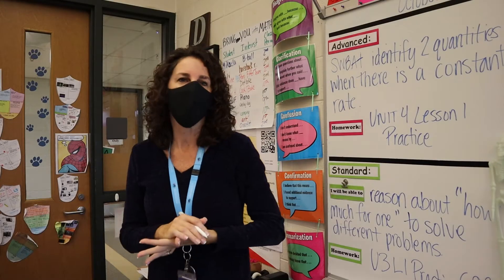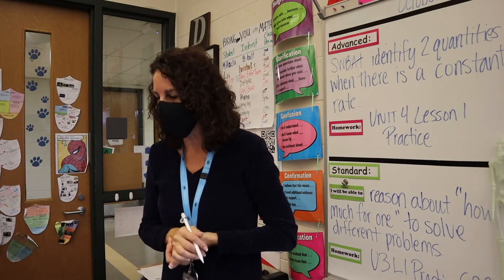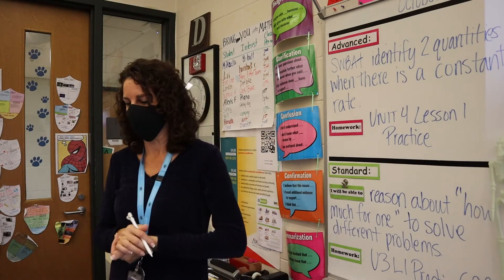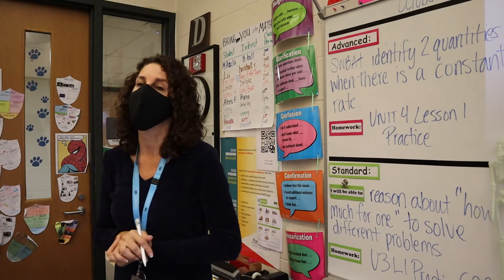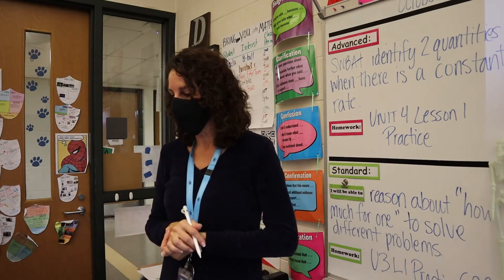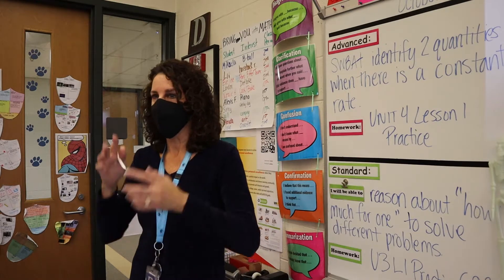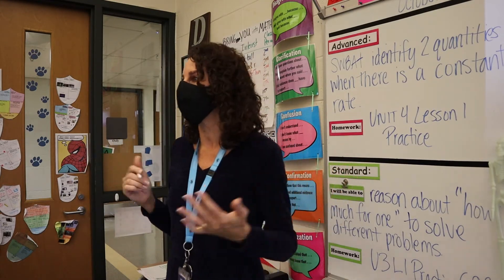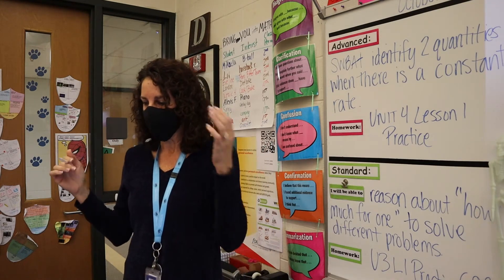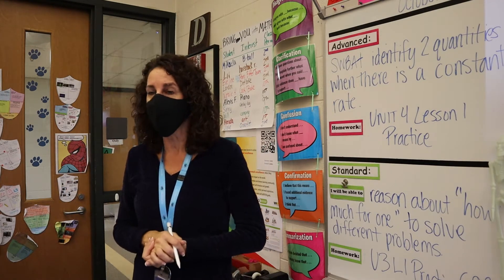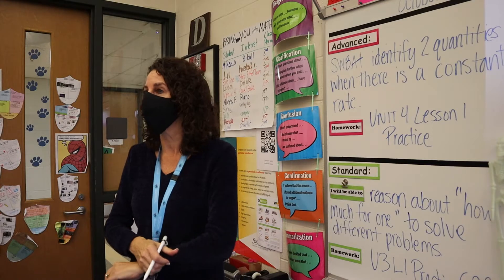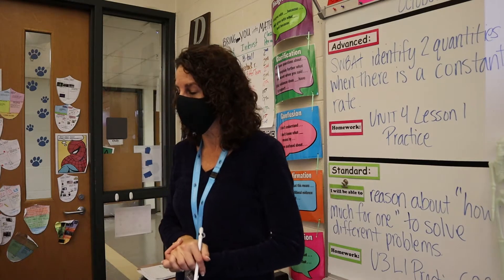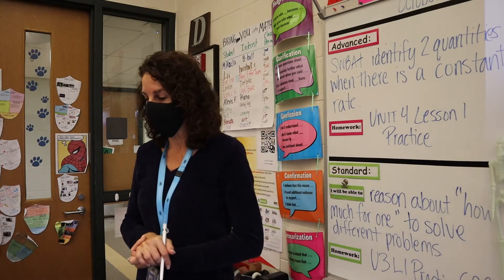Let's move on to the next activity, 1.2: Flags Are Many Sizes. One standard size for the United States flag is 19 feet by 10 feet. Think about that — 19 feet by 10 feet. Is that a large flag or a small flag? Pretty large. On a flag of this size, the union, which is the blue rectangle in the top left corner, is seven and five-eighths feet by five and three-eighths feet.